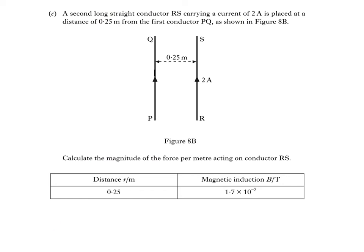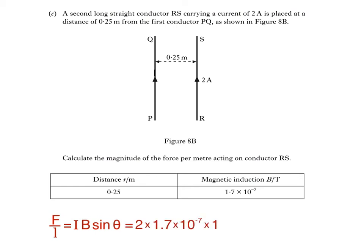So conductor RS experiences a magnetic induction of 1.7 times 10 to the negative 7 Tesla due to conductor PQ. To answer the question, we use the equation F is equal to ILB sine theta again. To find the force per metre — often called the force per unit length — we divide both sides by L, giving us F divided by L is equal to IB sine theta. Remember that current I is the current in conductor RS, and magnetic induction B is the induction experienced by RS due to PQ. When the conductors are parallel, theta is 90 degrees and sine theta equals 1, giving an answer of 3.4 times 10 to the negative 7 newtons per metre.